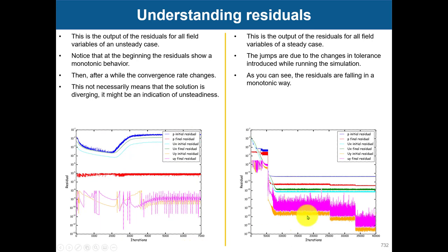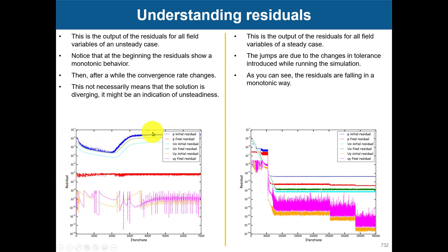Here we compare residuals for an unsteady simulation versus a steady simulation — initial and final residuals. The final residual is always reached; for example, for pressure the final residual is set to 10 to the minus 6, and for other variables 10 to the minus 8. The linear solvers always reach those values — or at least you have to be careful that they do — because that indicates a well-converged solution. When you use Python, PyFoam, or the residual function object, what you are plotting is the initial residuals.